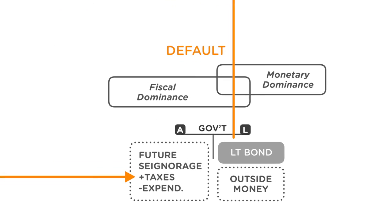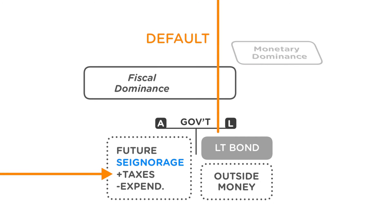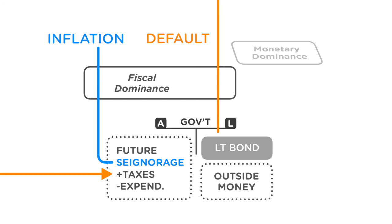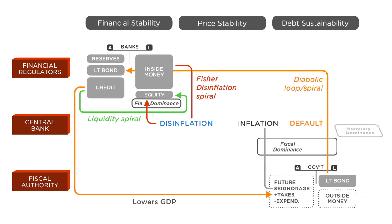Of course, the central bank could have given up its monetary dominance and agreed to print more money. Graphically, this is represented by a line bypassing the monetary but not the fiscal dominance box. This turns off the diabolic loop but leads to an inflationary force, especially when structural reforms are needed because the economy was hit by a permanent shock. This inflationary force could counterbalance the disinflationary force coming from the debt disinflationary spiral, which in turn comes from the interaction between price and financial stability. So essentially you have two forces — a disinflationary one and an inflationary one — pushing in different directions.